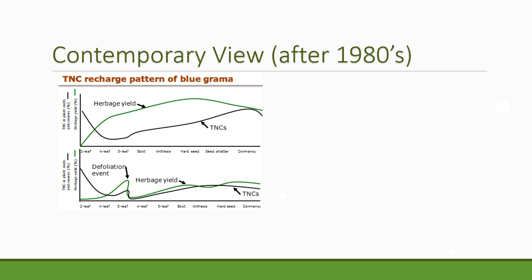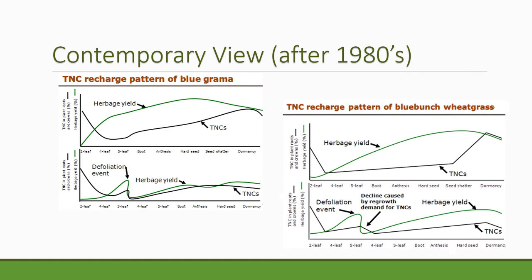If you add a defoliation event at the five-leaf stage — thinking that a plant might make it to seven or eight leaves before producing seeds — if you defoliate early in its life cycle, the total non-structural carbohydrates go down and the plant starts to use those carbohydrates, but then it starts putting on herbage yield again and gets back into carbon balance in just a short time. This is bluebunch wheatgrass, a similar graph — early in the spring the total non-structural carbohydrates go down, herbage yield goes up, and by the time you get to three or four leaves the plant is in a positive carbon balance. If you defoliate the plant at the five-leaf stage, TNC and stored carbohydrates go down, but pretty quickly the plant starts to grow more leaves and gets back in carbon balance.